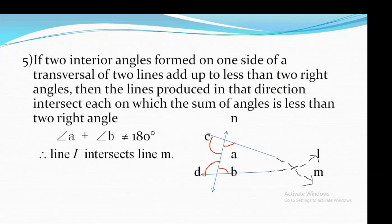We know the transversal intersects two or more lines. Normally the sum of the interior angles would be 180 degrees, but in the fifth postulate, if you produce the lines in one direction, line L and line M will intersect each other. When they intersect, interior angle A and angle B are each less than 90 degrees, so their sum is definitely less than 180 degrees.